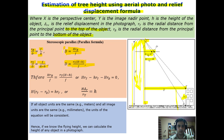Equalizing the two expressions: H·rb upon f equals rt·(H minus h) upon f. Rearranging, H·rt minus H·rb equals h·rt, and solving for height gives h equals H·delta r upon rt.